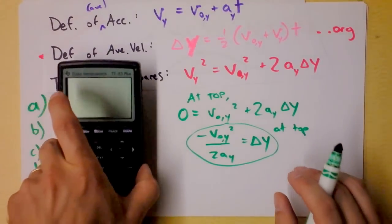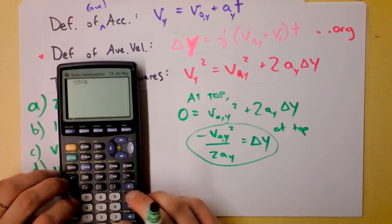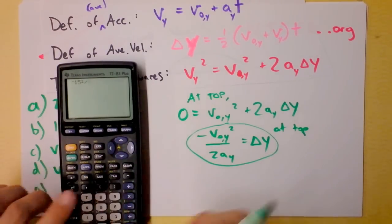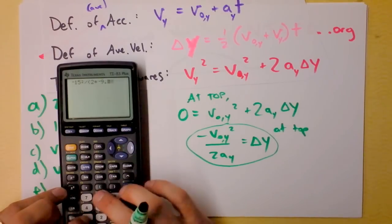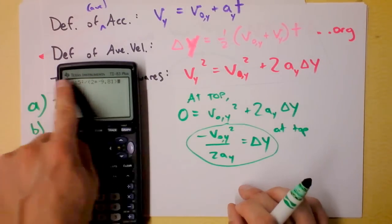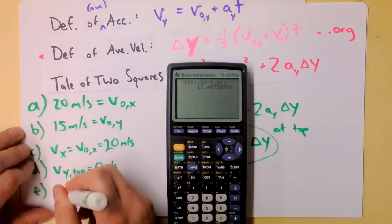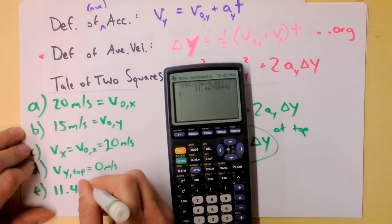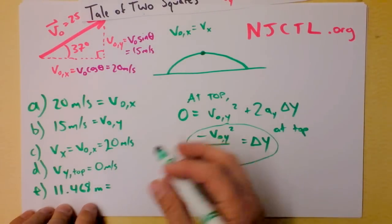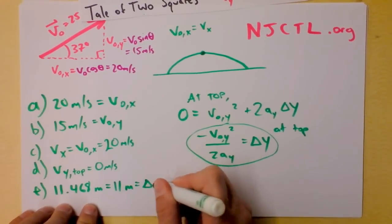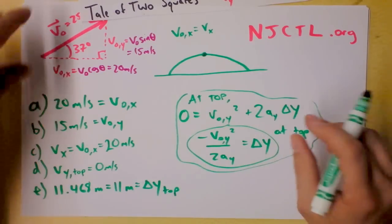Plugging in: negative (15 m/s)² divided by 2 times (−9.81 m/s²). The two negatives cancel out. I get a height of 11.468 meters. With two sig figs, that's 11 meters — delta-y at the top.